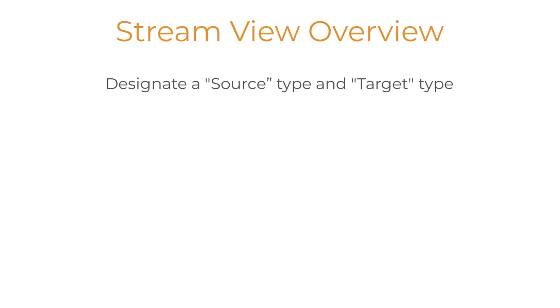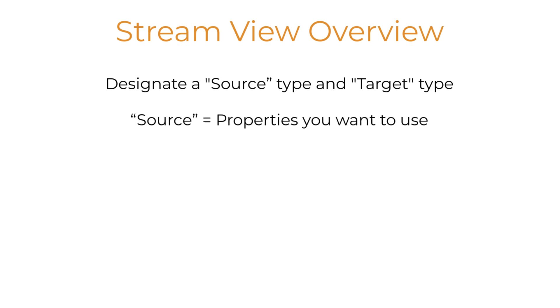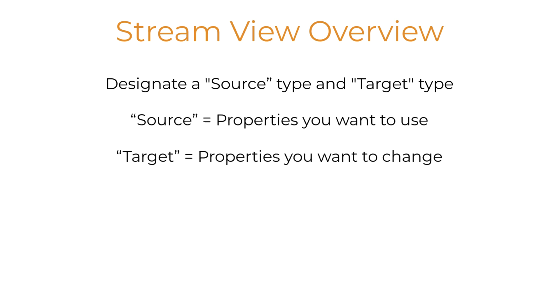To create a StreamView in the OCS portal, designate a source type and a target type. The source type is a type with properties you'd like to use, and the target type is a type with the properties you'd like to change.